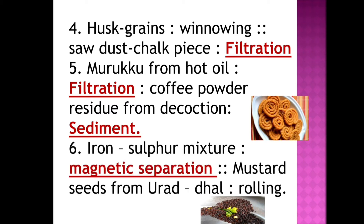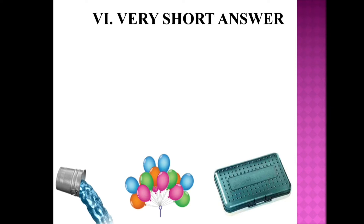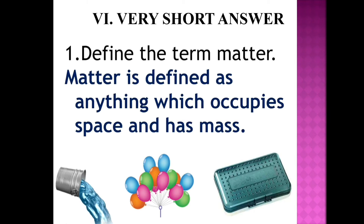Sixth analogy: iron and sulphur. Iron is a magnetic material, so it can be separated by magnetic separation. Mustard seeds from urid dal can be separated by rolling.